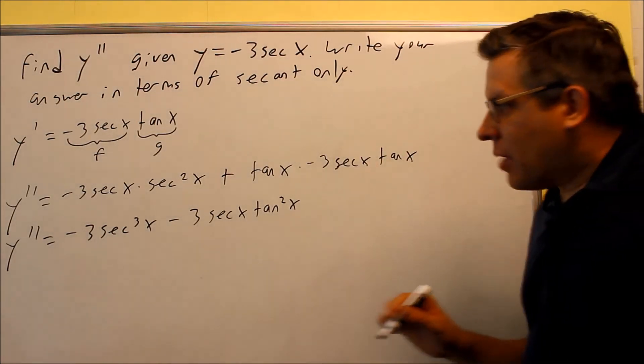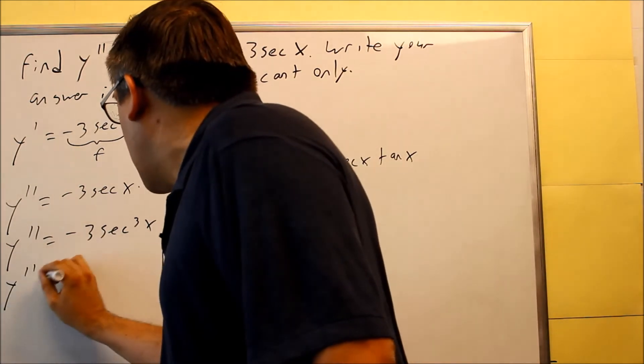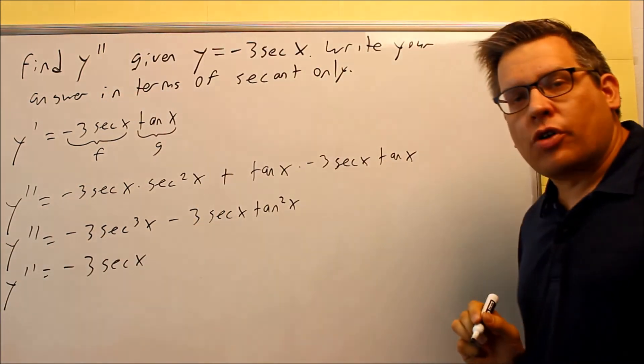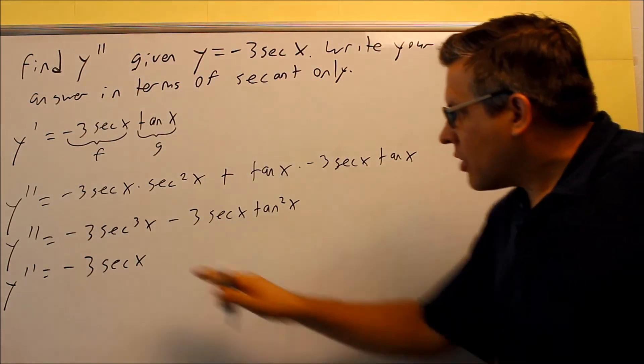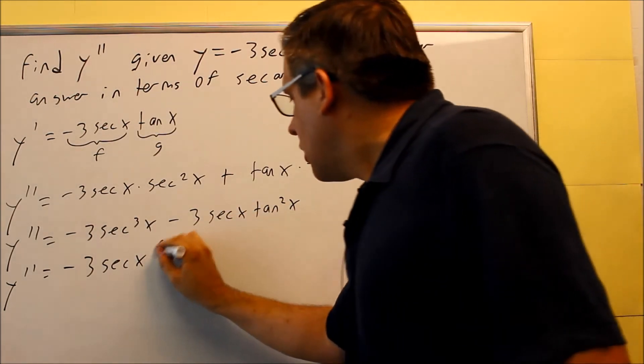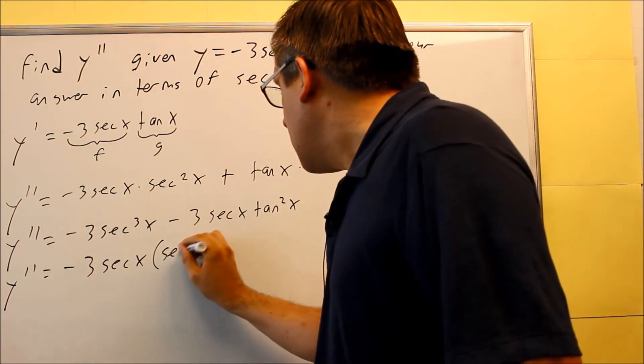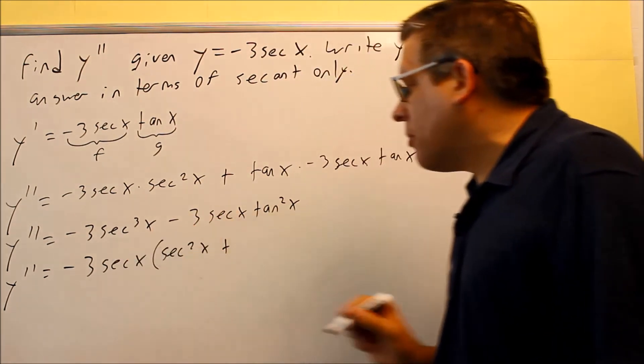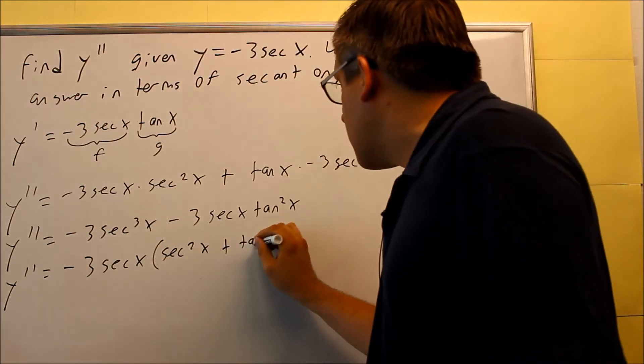We want to do a factoring step next. So y double prime is going to be, we're going to pull out a negative 3, negative 3 secant x is what you can pull out of that one because that's the common term that we have in each one. The first one is going to leave you with secant squared x, and then you have a plus there because you're pulling out a minus plus the tangent squared x.